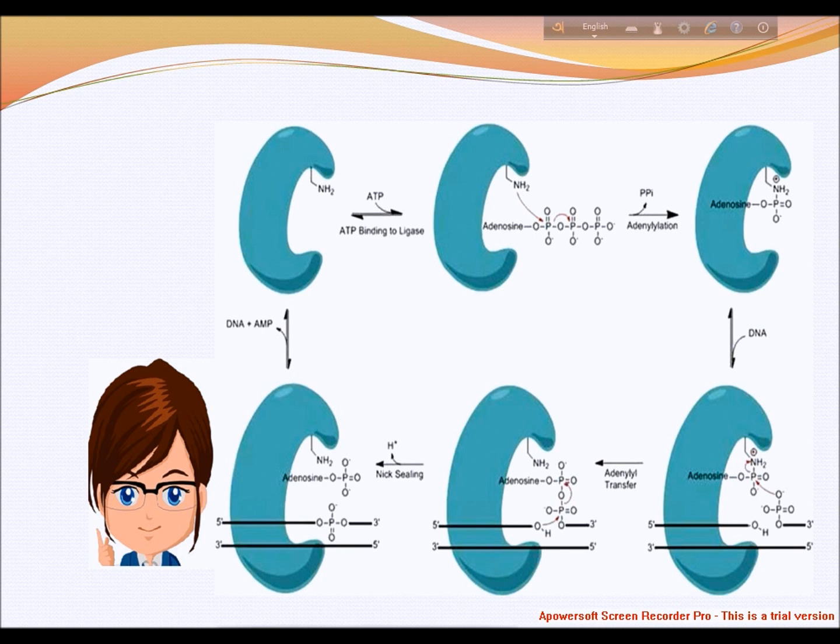DNA ligase from eukaryotes and some microbes uses adenosine triphosphate (ATP) rather than NAD. The last one is thermostable ligases. Ligases from various thermophilic bacteria have been cloned and sequenced and are available commercially for use in ligase amplification reactions because of their thermostable properties.